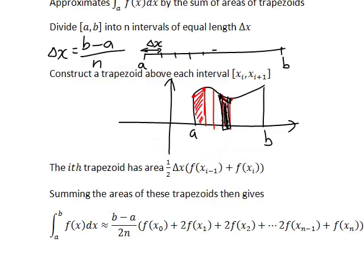Because the integral from a to b of f(x) is the area bounded by f(x) and the x-axis between a and b, it follows that summing up the areas of all these trapezoids gives us an approximate value of the area under the curve, or the approximation of the integral from a to b of f(x).